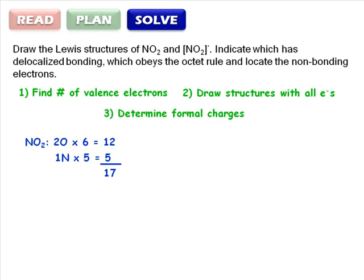NO2- is the same, except it has a negative charge, which counts for one extra electron, for a total of 18. Now draw the Lewis structures. Connect the atoms.